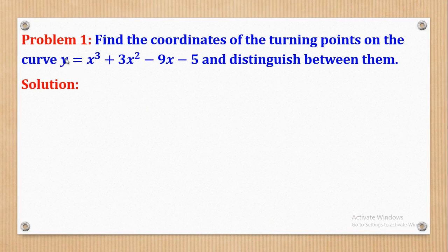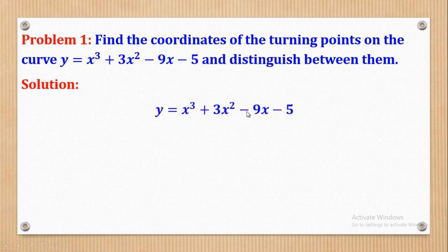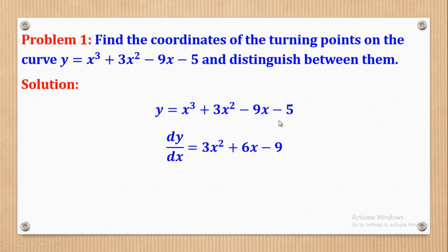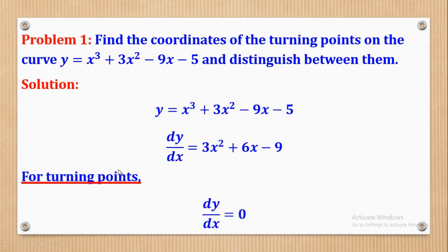We shall use that knowledge to solve the following problems. Problem 1 says: find the coordinates of the turning points on the curve y = x³ + 3x² − 9x − 5 and distinguish between them. First, we differentiate: dy/dx = 3x² + 6x − 9. Differentiating a constant gives 0. We then remember that for turning points, dy/dx = 0.